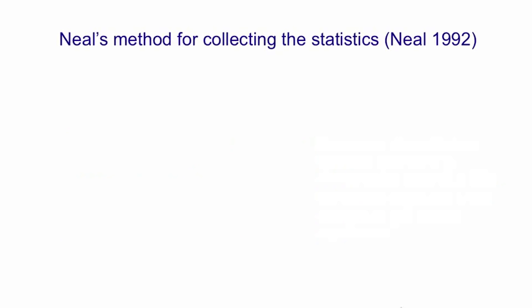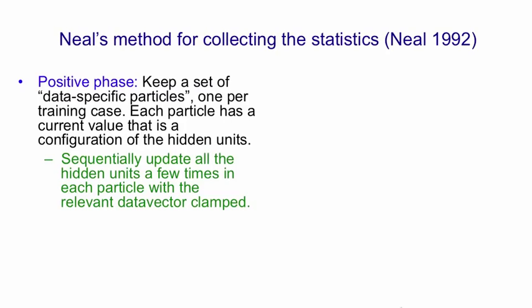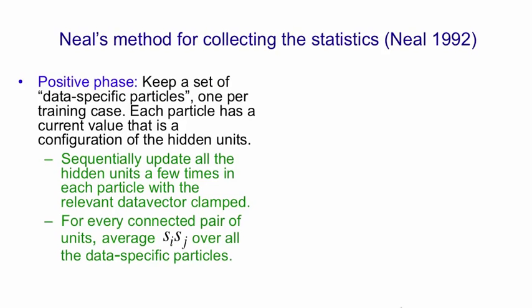Here's the method for collecting statistics introduced by Radford Neal in 1992. In the positive phase, you have a set of data-specific particles — one or a few per training case — and each particle has a current value that's the configuration of the hidden units plus which data vector it goes with. You sequentially update all the hidden units a few times in each particle with the relevant data vector clamped. And then for every connected pair of units, you average the probability of the two units being on over all these particles.